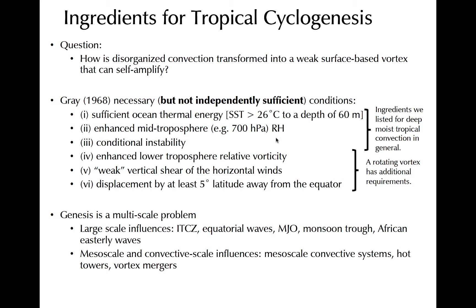The atmosphere must also be sufficiently unstable to support convective growth. Some additional criteria are required for TC genesis that don't apply to the generic case of disorganized convection. First, ample relative vorticity must be present in the environment. Second, vertical wind shear must be weak — nominally less than about 15 knots. And finally, the vortex must generally be about 5 degrees of latitude away from the equator, where the Coriolis parameter is not essentially zero.